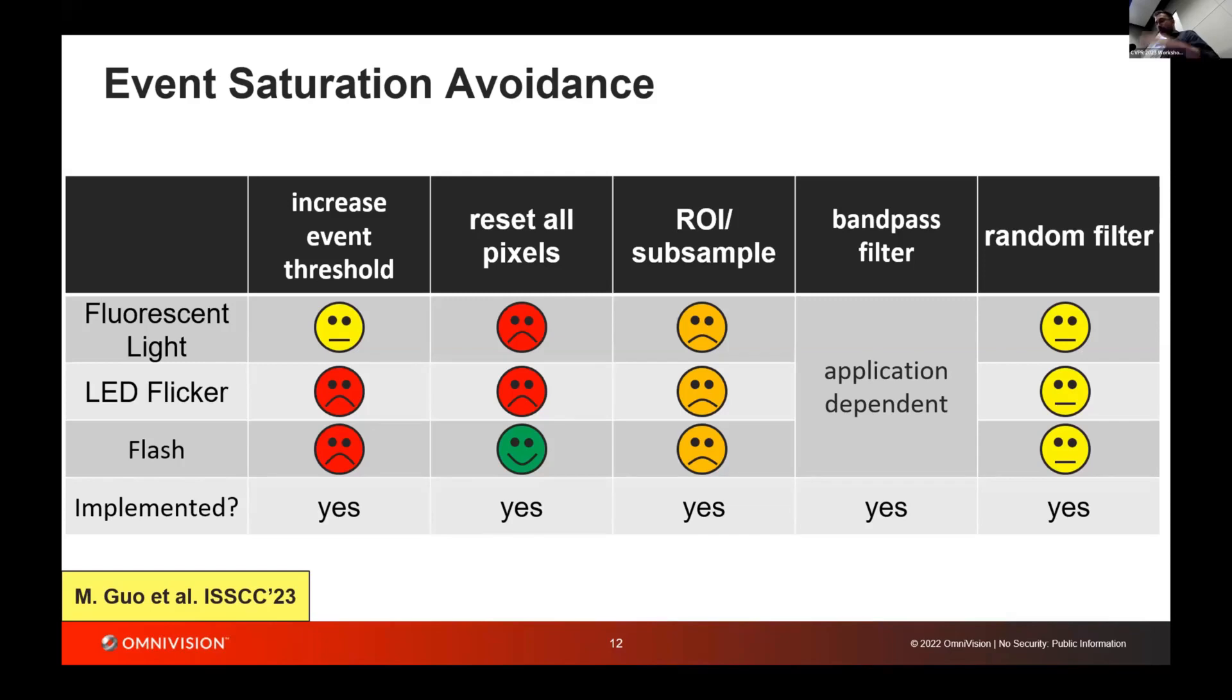We can do region of interest and subsample, and we implement a mode where the subsampling is randomized, so you don't always subsample the same pattern. If you do fusion, for instance, for deep blur and so on, this does matter because you might see some artifacts if you always subsample the same pixel. And again, I talked about the bandpass filter. This is really implemented in analog in the pixel.